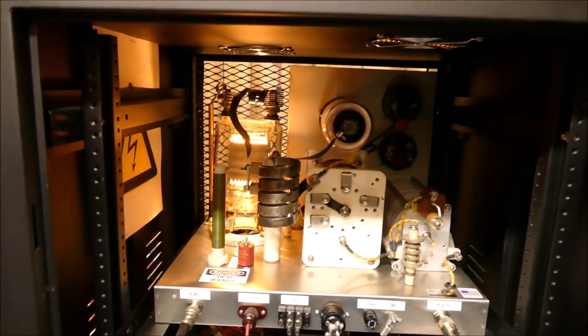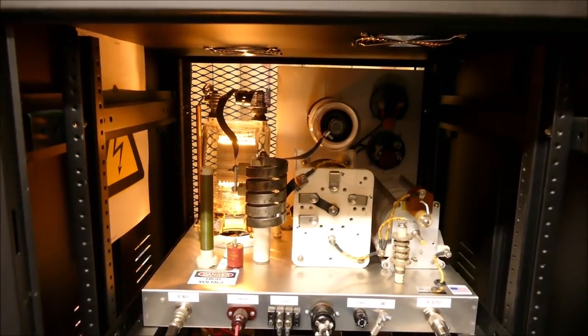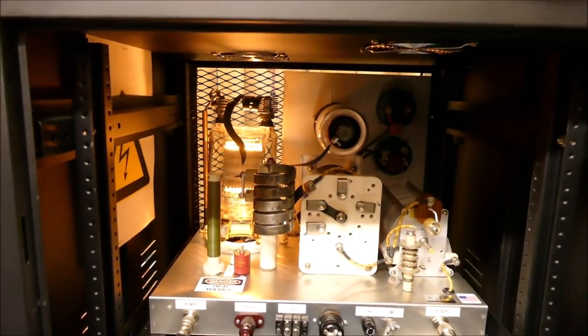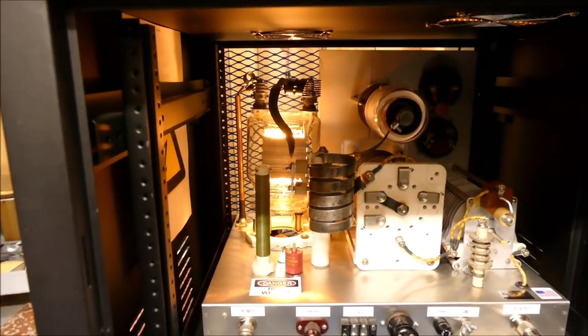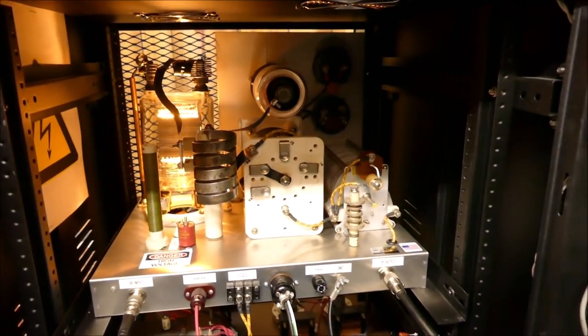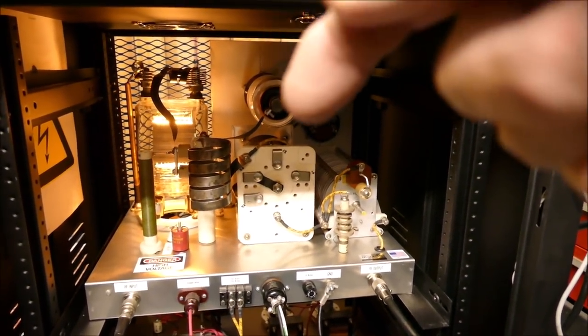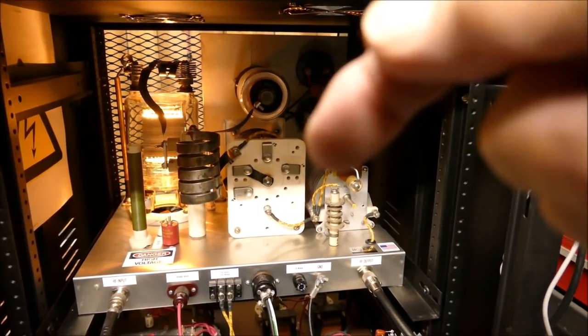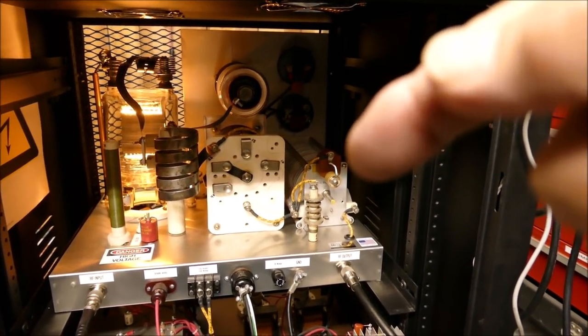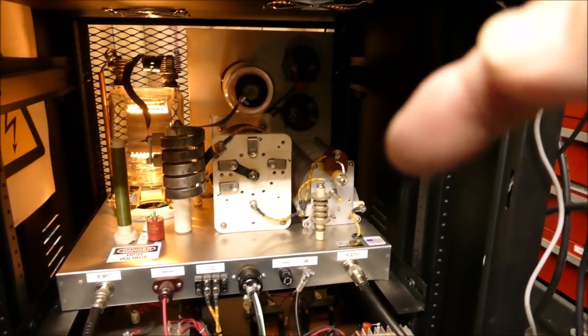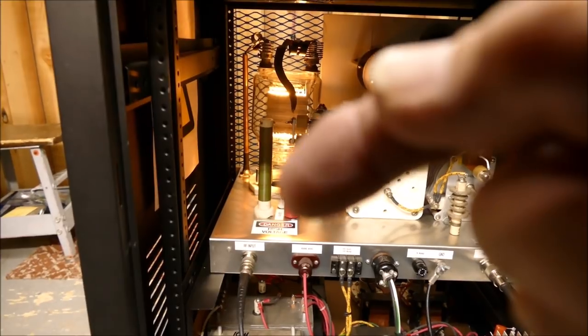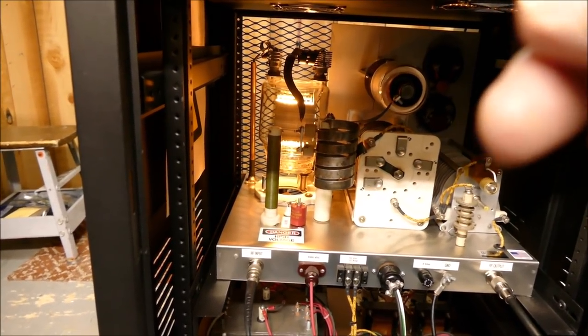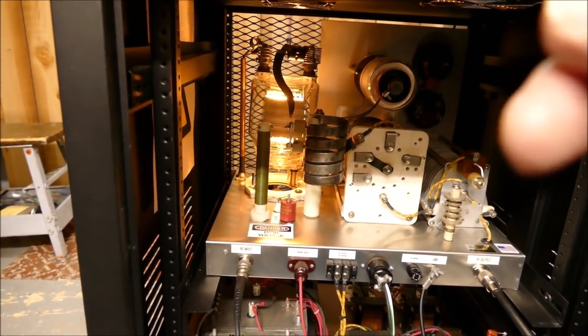This is what it looks like from behind. We're not driving it right now, the high voltage is off. As you can see the 833, it's got a vacuum capacitor right up here. There's the tank circuit down there. This is a loading capacitor over here with a couple of padders on it, and the high voltage plate choke.